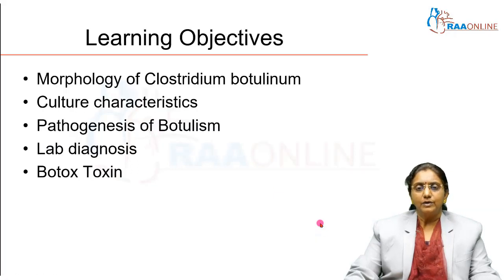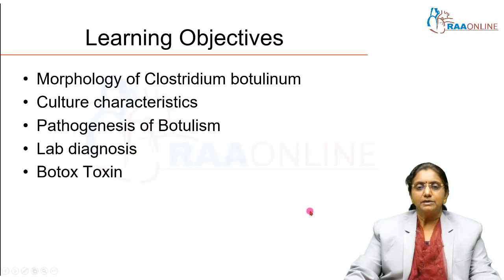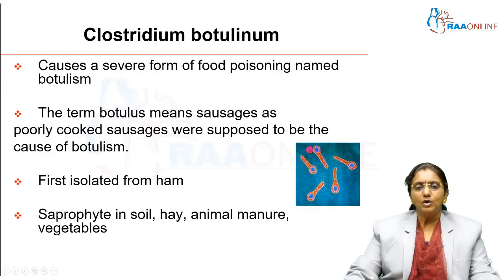The learning objectives for this session will be: we will look at the morphology of Clostridium botulinum, its culture characteristics, how botulism develops, how to diagnose it in the laboratory, and a few important applications of the Botox toxin, which is a toxin produced by Clostridium botulinum. Clostridium botulinum is an anaerobic gram-positive bacillus which produces spores.